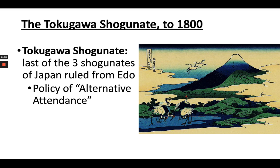The Tokugawas ruled from the city of Edo, which is modern-day Tokyo. Their victory put an end to the civil wars and brought political unity and centralization to Japan. Based on their own military power and political skills, the shoguns gave Japan two centuries of internal peace.